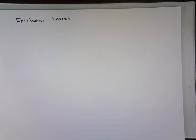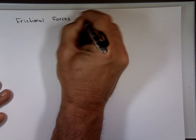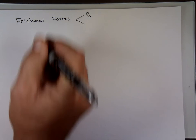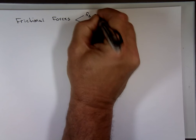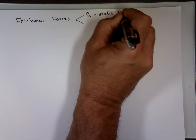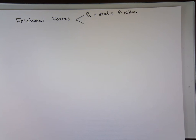We said frictional forces - force due to friction. Force is not just one force, because we have two types of frictional forces: we have static friction and we have kinematic friction. F of S is static friction, which means the object is not really moving.